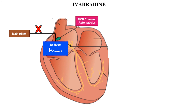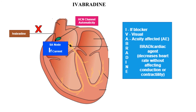Ivabradine is a very new drug — it is a funny current blocker that reduces the automaticity of the SA node, decreasing the number of impulses generated from the heart. It is useful in angina caused by excessive impulse generation. A useful memory clue is the drug name itself. Adverse effects include visual disturbances affecting visual acuity. It is a bradycardic agent — it decreases cardiac rate without affecting conduction or contractility.